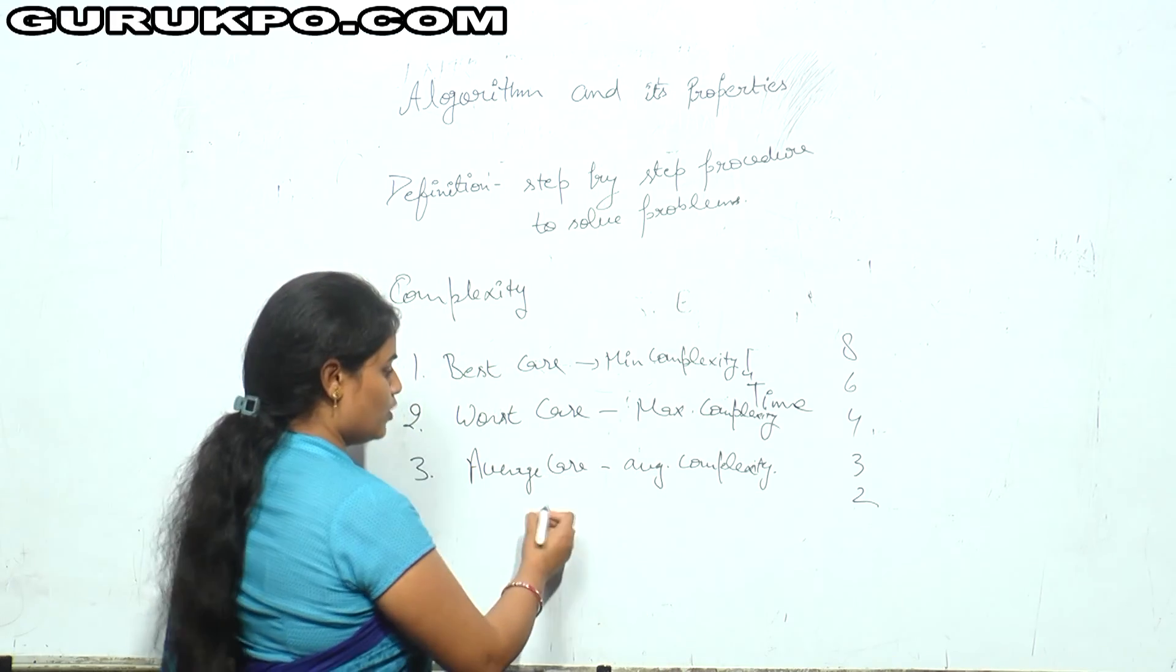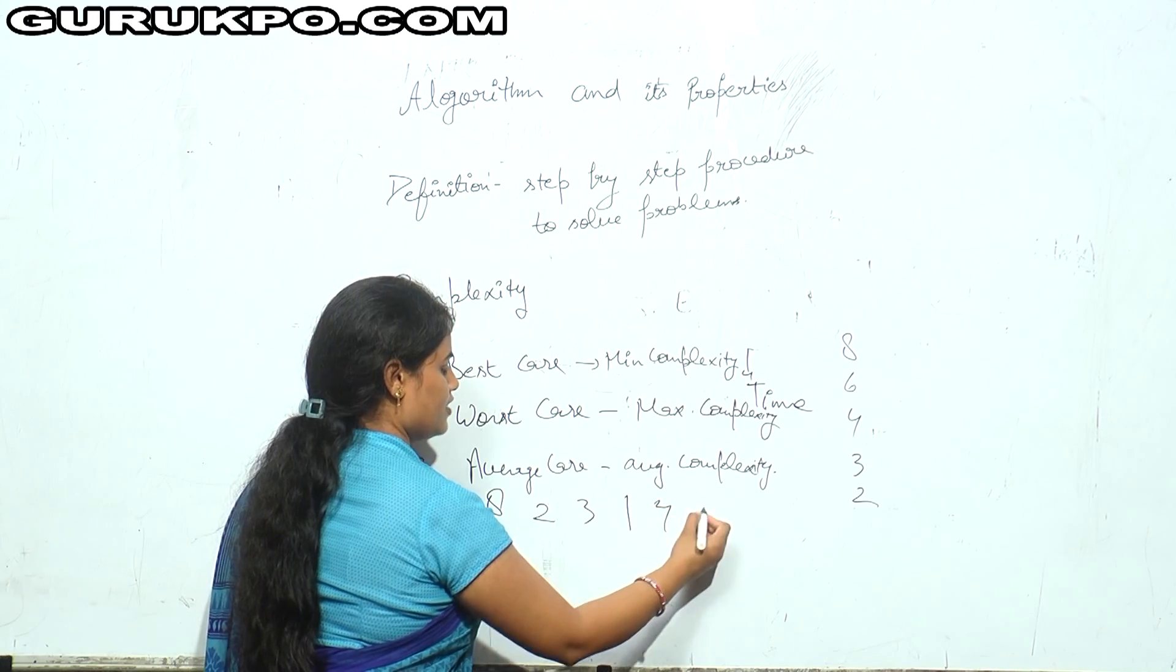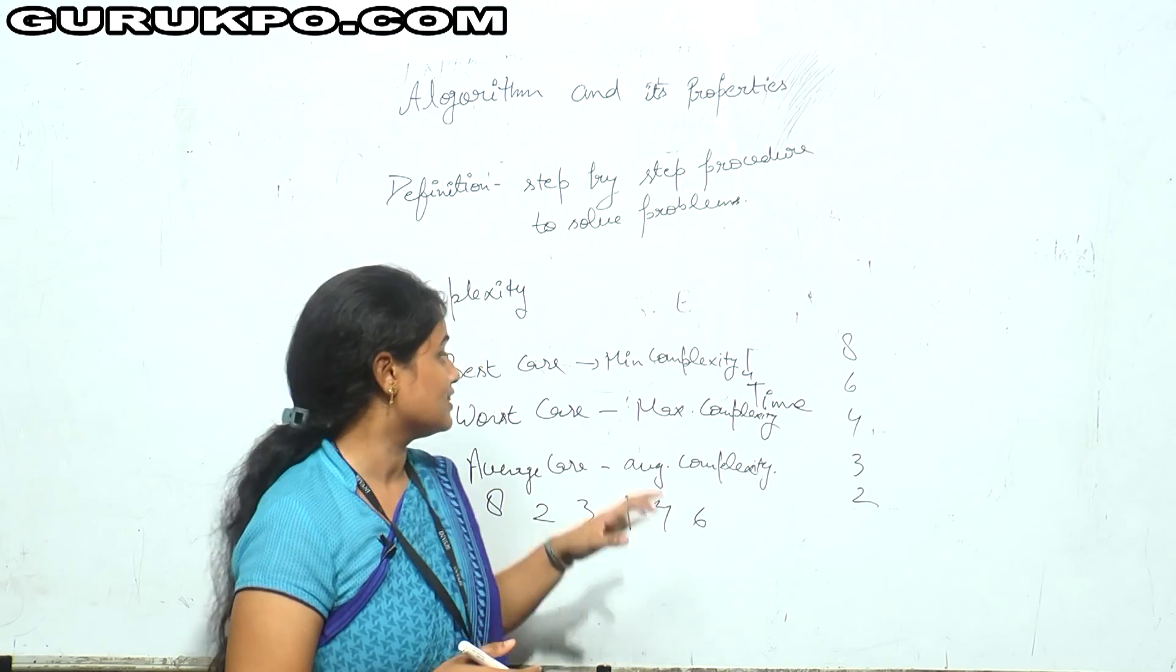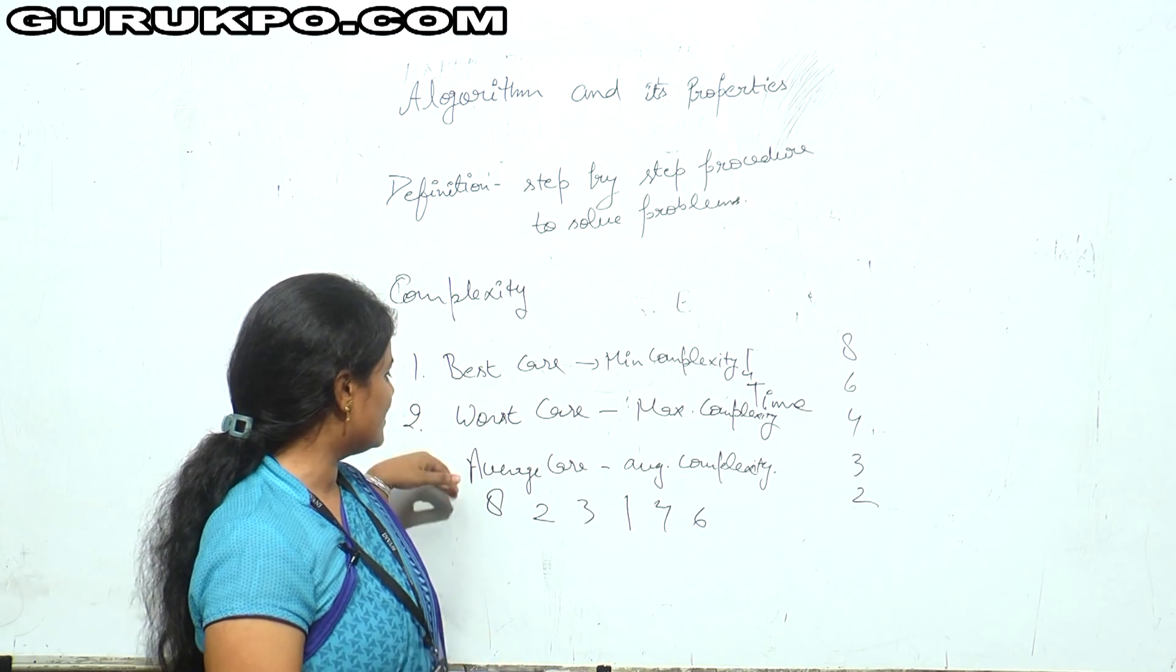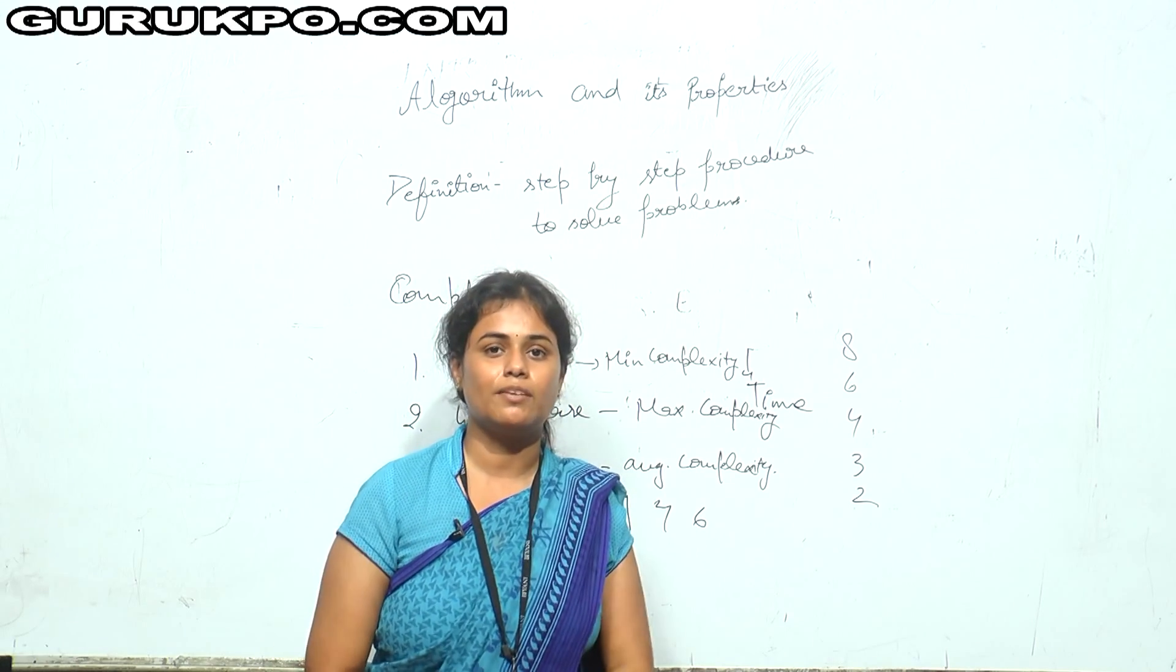And suppose I take the random input like 2, 3, 8, 1, 7, 6. Then it will take the average time. This is the average case complexity. Then complexity can be measured in three terms: average, worst and best case. This is all about algorithm. And next let's go.